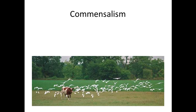The last relationship is commensalism, when one organism benefits and the other is unaffected. For example, egrets around cattle — the cow doesn't care, but egrets benefit greatly because they like to eat bugs and flies. The cow produces droppings that attract flies and bugs, and the egrets eat those insects and organic materials.